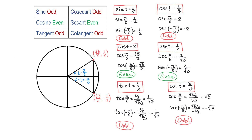So out of all these six functions, only cosine and secant stay the same as t is replaced with negative t. Then we can say that only these two functions are even. I hope you enjoyed this video. Please subscribe, leave a comment, and thank you for watching.